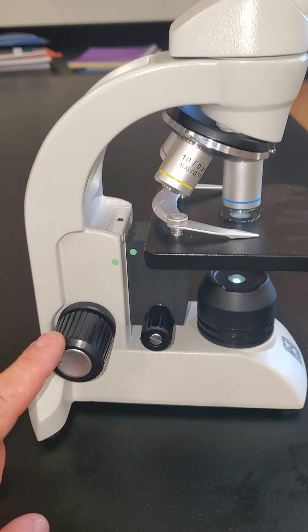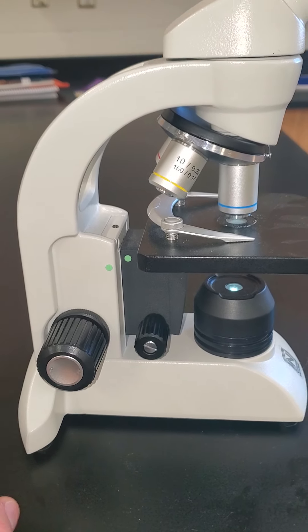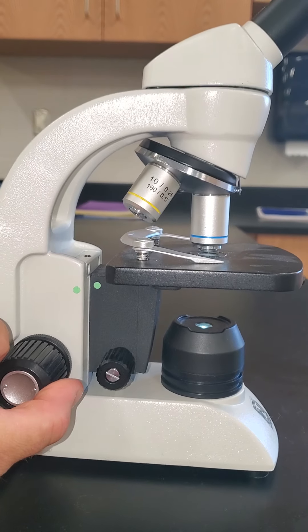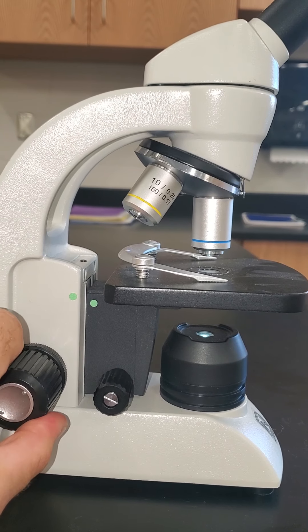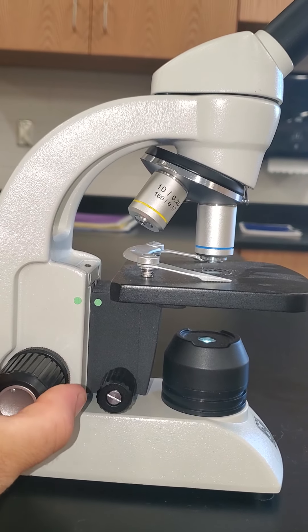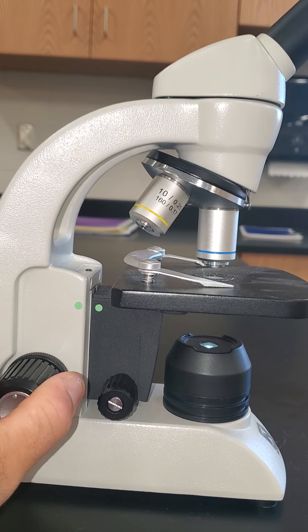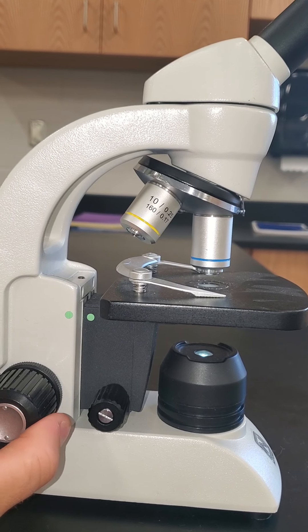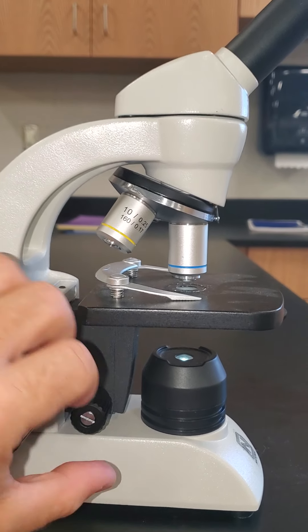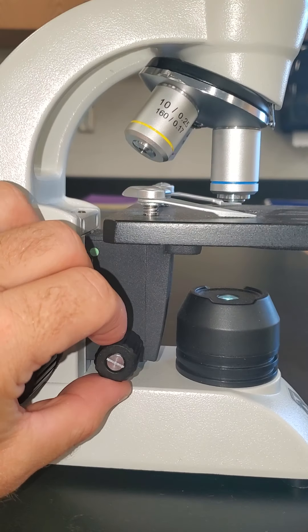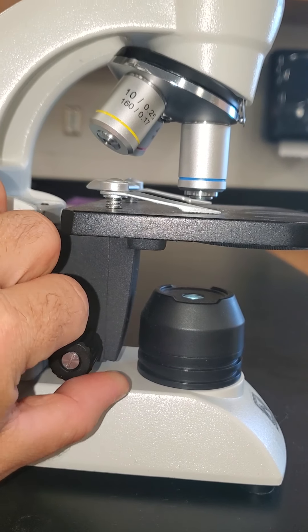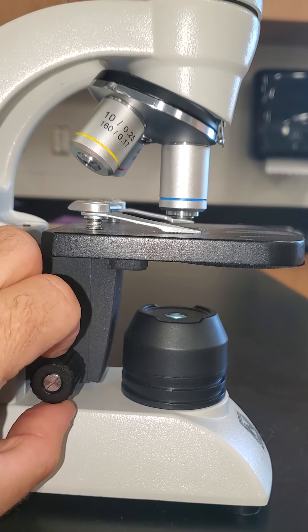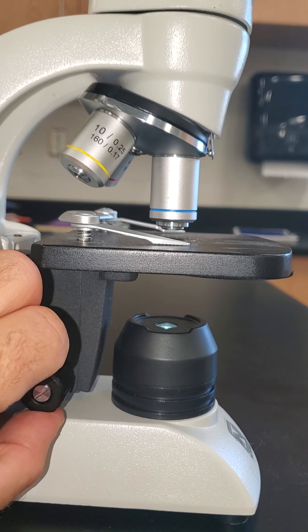Down here are going to be our adjuster wheels to allow us to focus our image. The bigger wheel moves our slide table more. You can see that I can actually see the slide table moving a lot with the coarse adjustment. So usually that is the wheel we start with to try to get our image slightly in focus. To really sharpen our focus we would use the fine adjustment wheel. As I turn that, you actually cannot with your eyes see the table move, but it is moving very slightly.